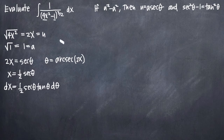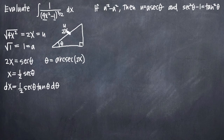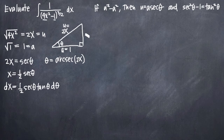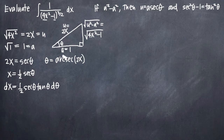The last thing we need is our right triangle for the secant substitution. When we have a secant substitution, if theta is our angle, then our hypotenuse equals u, which we know is 2x. The adjacent side will be a, which equals 1. And our opposite side will be the square root of u² - a², which is the square root of 4x² - 1 — what we had in our original function.